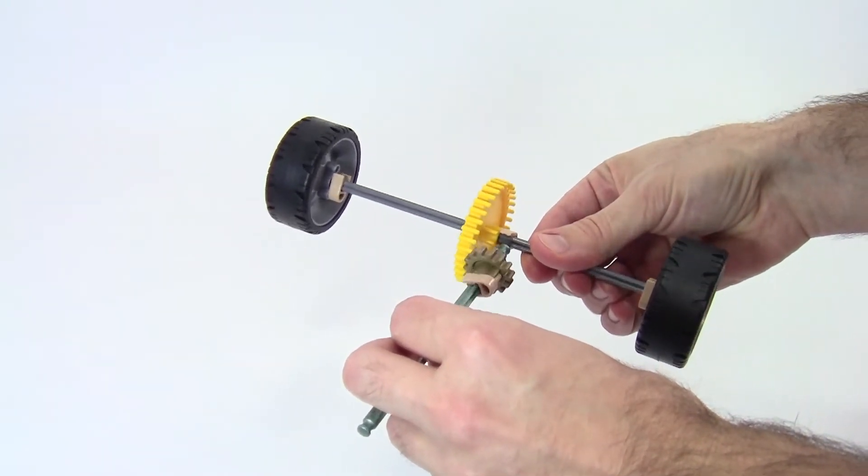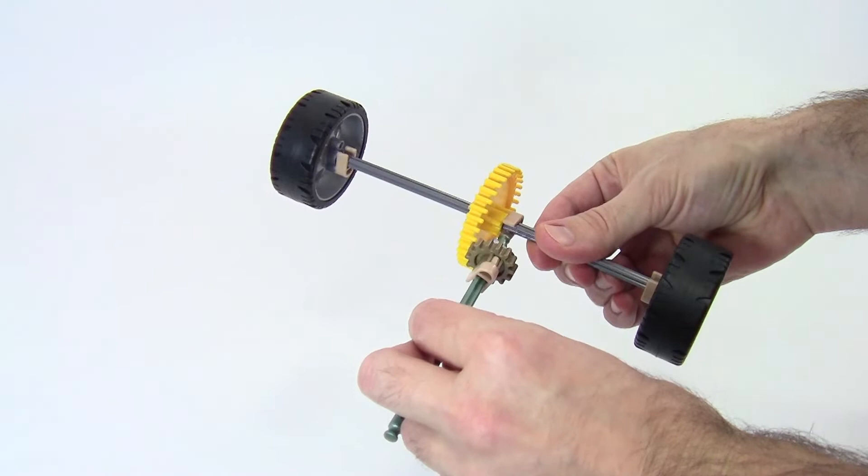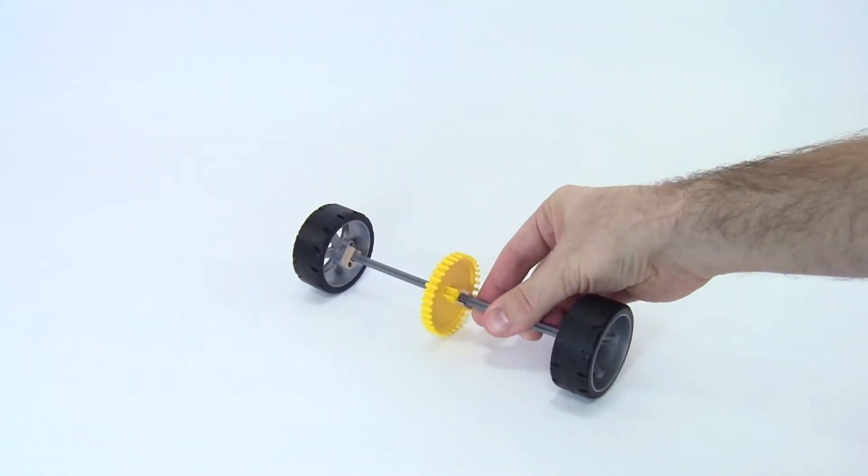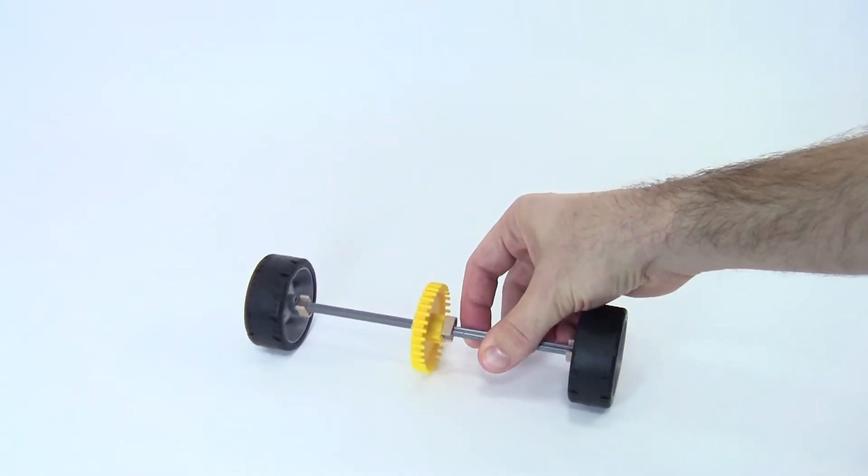So when the gears mesh and the drive shaft spins, the entire axle spins. This creates a problem when the axle turns because the wheels can no longer spin independently. One of them must slip with respect to the ground in order to go around the turn.